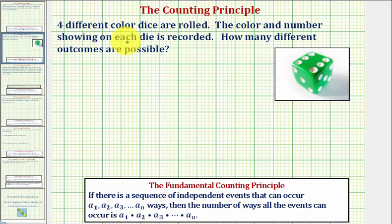So here, because we have four different colored dice, we can think of this as four independent events. So one event, two events, three events, and four events.